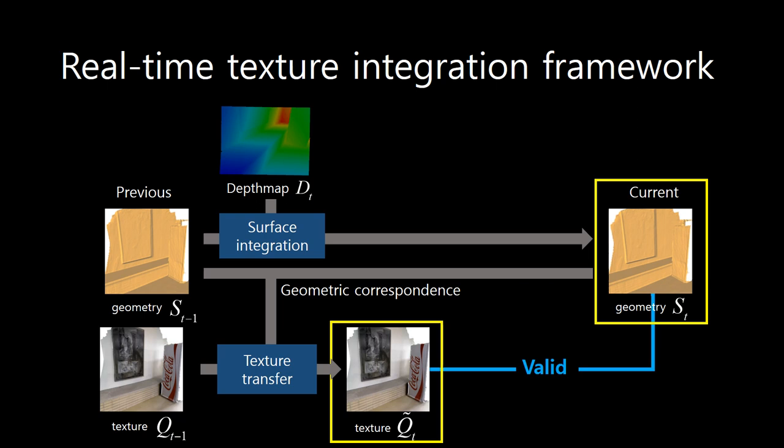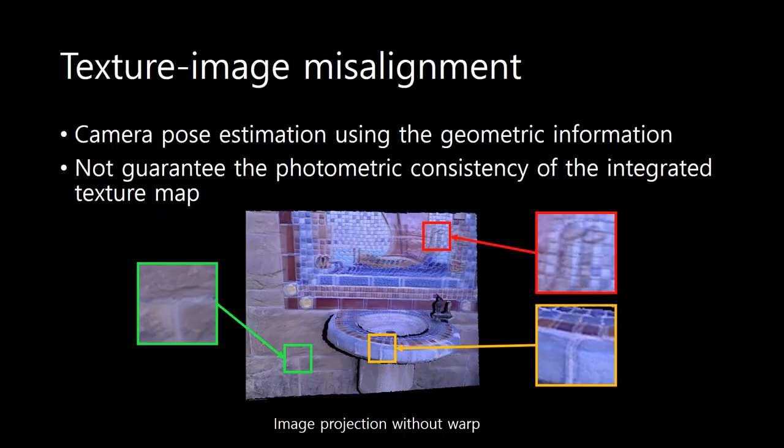Now, the transferred texture map is valid with respect to the current geometry. Here, we estimate the camera pose of the current frame using the geometric information of the current depth map with respect to the accumulated geometry.